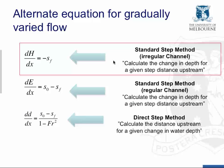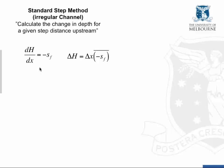The final method is the standard step method for an irregular channel — essentially the same method but for irregular cross-sections. In practice, you wouldn't be asked to do this by manual calculation; you'd use software like HEC-RAS to perform the iterations. For the irregular channel, we use the full energy term and tend to use stage rather than water depth.